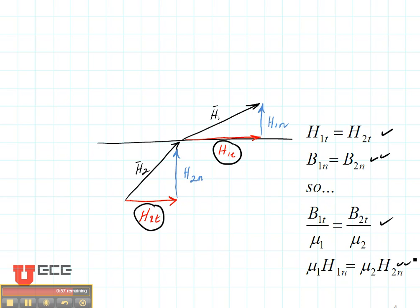This way, if we know the electric, the magnetic field or the magnetic flux density in one of the regions, we can find the magnetic field or flux density in the other.